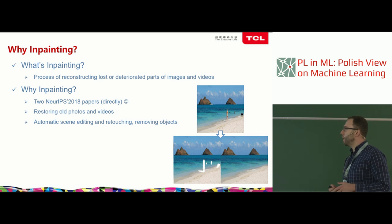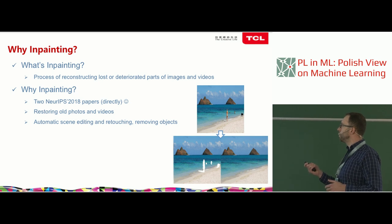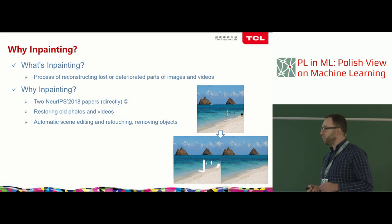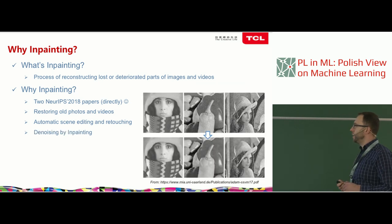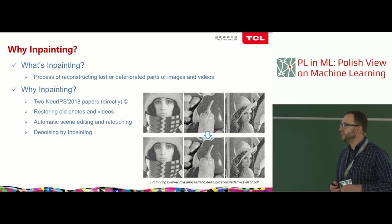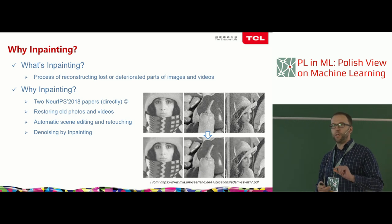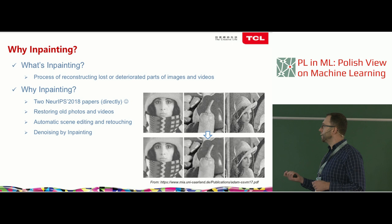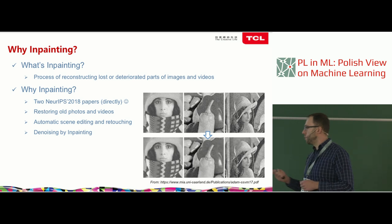Another obvious application is automatic scene editing and retouching. We have some photos with objects we want to remove, so we put a mask on the objects and get a clear photo without them. There are also other applications — in-painting can be used for denoising as well. As a kind of side effect, the in-painting results tend to be smooth even with noisy input.